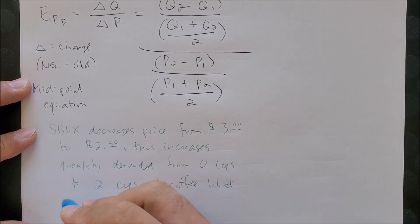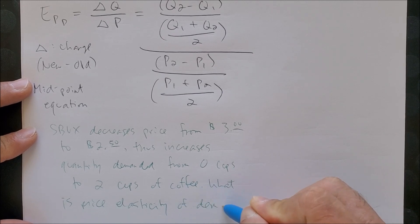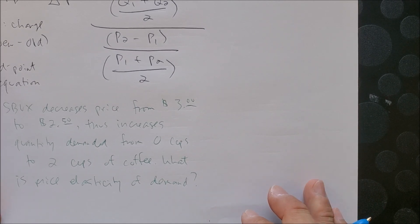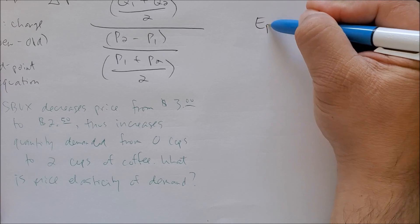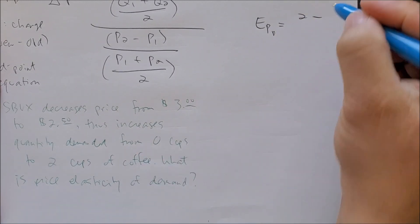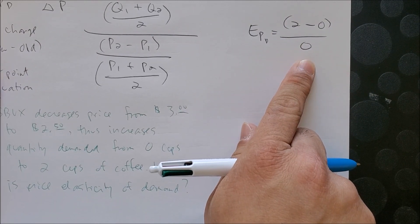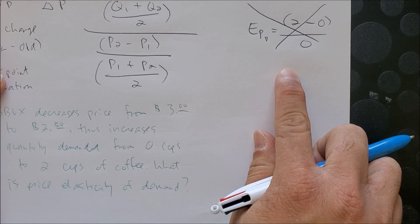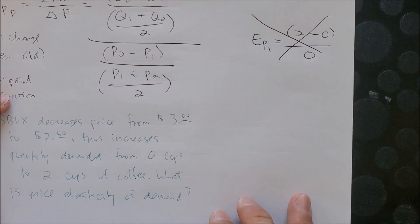What is the price elasticity of demand? If we were to use the old equation — Q2 minus Q1 over Q1 — we run into the problem of having zero in the denominator. When this happens, it becomes undefined and we can't solve. That's why when we have zero as a starting point, the midpoint equation is much more accurate to use.